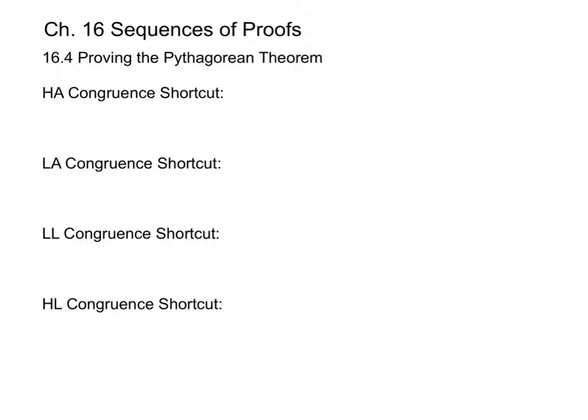We're going to start with some shortcuts for how you can prove triangles to be congruent more easily. First is the HA congruence shortcut, which says that if the hypotenuse and an acute angle of a right triangle are congruent to the hypotenuse and an acute angle of a second right triangle, then the two right triangles are congruent.